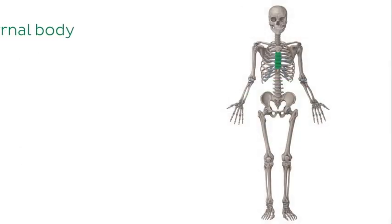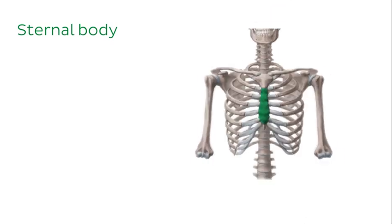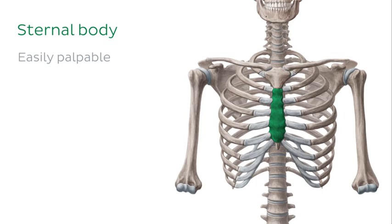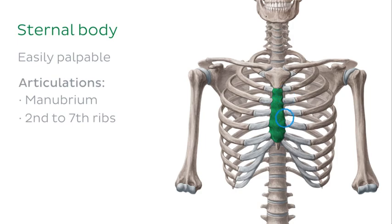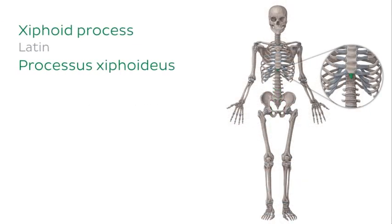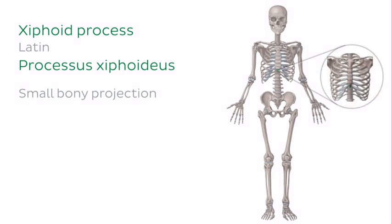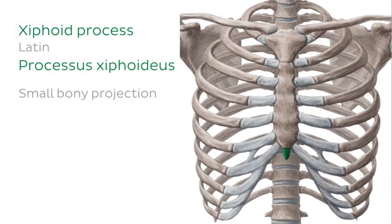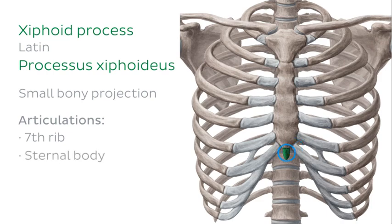The body of the sternum, or sternal body, is a flat bone with a convex anterior surface and a concave posterior surface. It is quite easily palpable and it forms articulations with the manubrium, the second to seventh ribs and the xiphoid process. Lastly, the xiphoid process of the sternum is a small bony projection that possesses demi-facets for part of the seventh costal cartilages and also articulates with the sternal body.